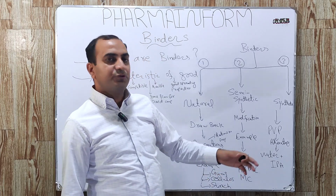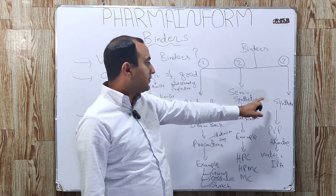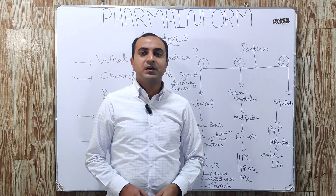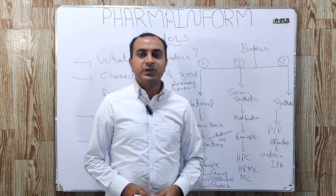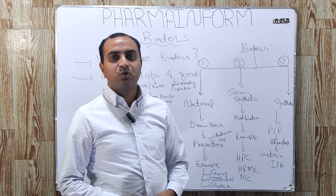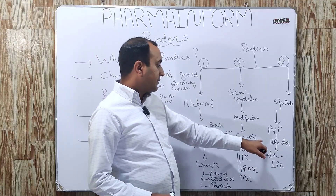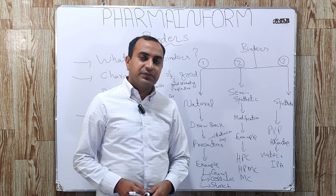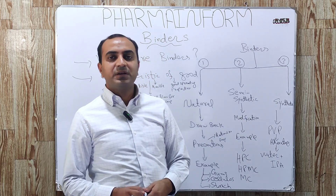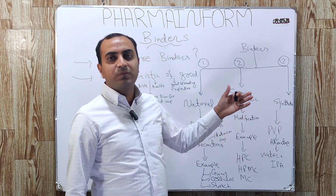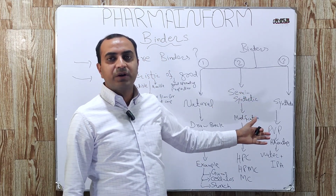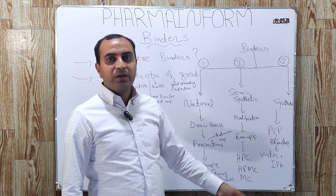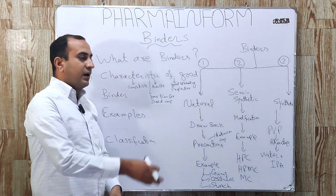The third class is synthetic binders. One of the most commonly used binders under the synthetic category is PVP, also known as Kollidon. This is a synthetic binder. The advantage of PVP is that it is soluble both in water and isopropyl alcohol.